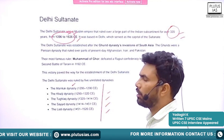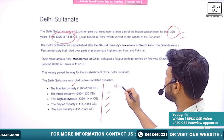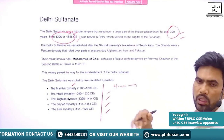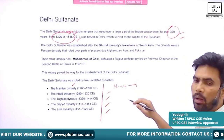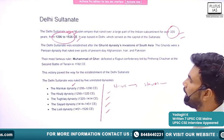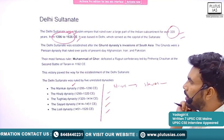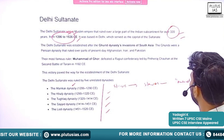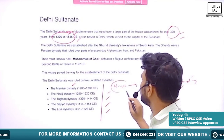Those dynasties are: the Mamluk Dynasty, also known as the Slave Dynasty. This name came because most of the rulers who became kings in this dynasty were previously slaves. Mamluk means 'owned,' which directly or indirectly means a person owned by another person — it comes to slave only.